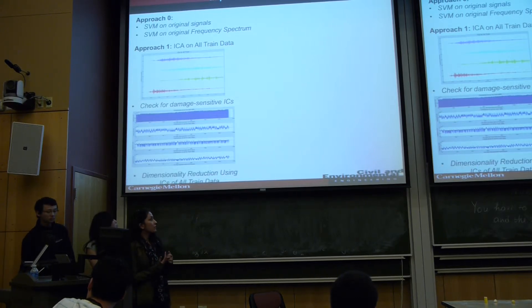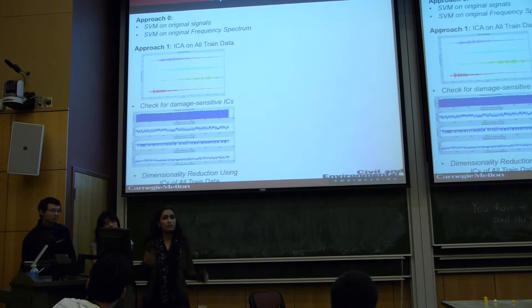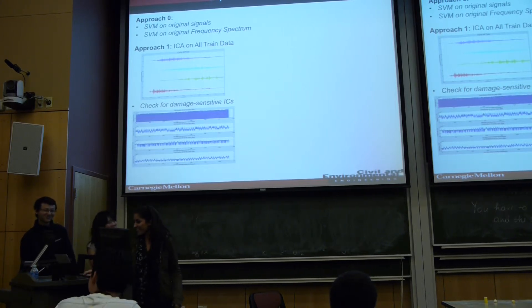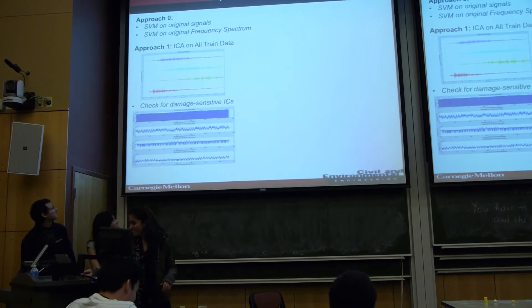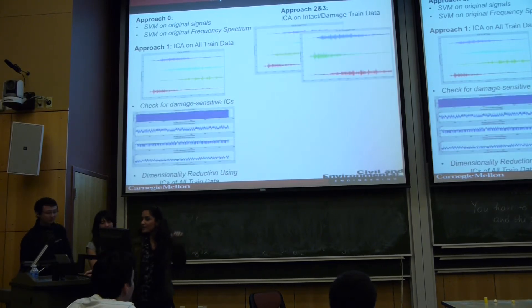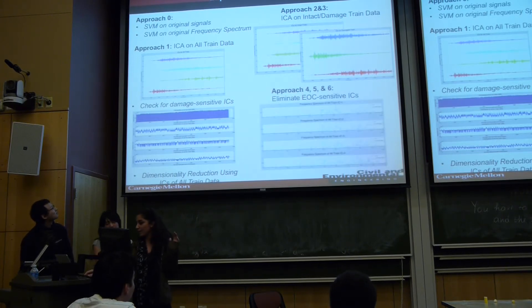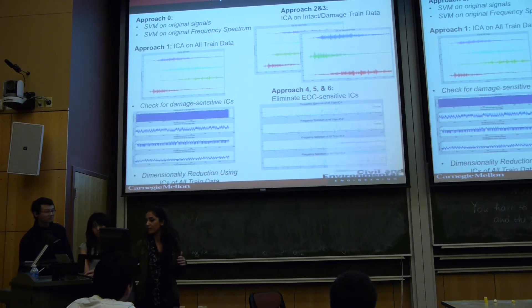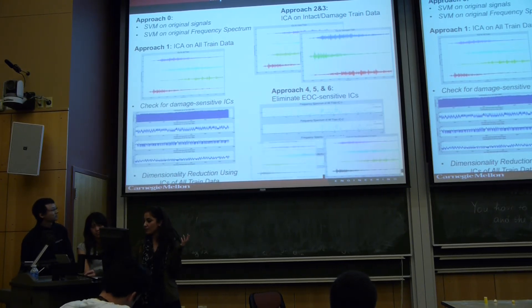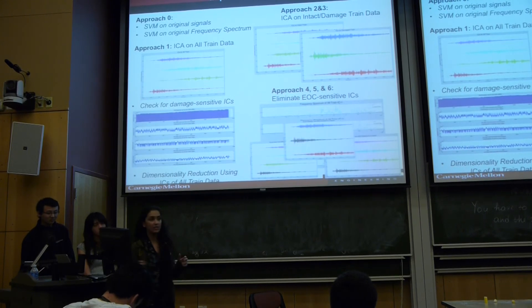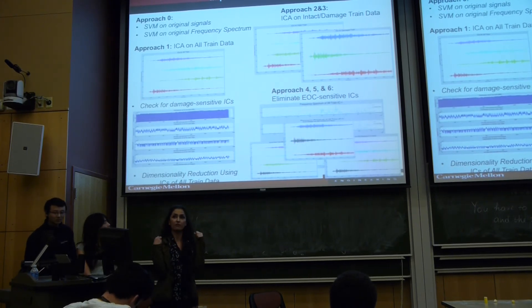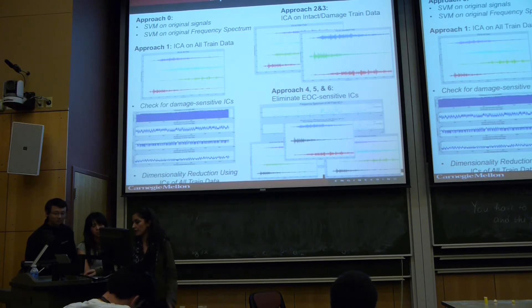So then we also use that for that dimensionality reduction, like as PCA. So again, we implemented in separated damage and intact data. And also we try to see if we can identify some factors that are sensitive to environmental condition and detect them and eliminate them from factors. And do the projection on those components separately.